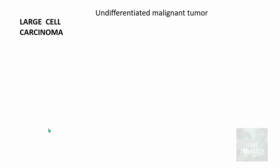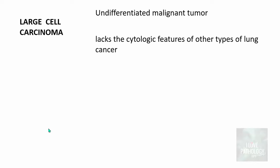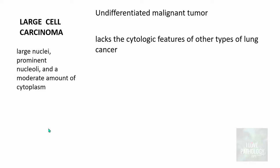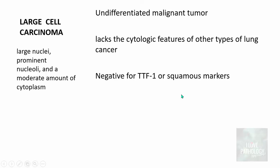Large cell carcinoma is another undifferentiated malignant tumor that lacks the cytological features of other lung cancer types. The cells do not look like squamous, small cell, or adenocarcinoma — instead they have large nuclei, prominent nucleoli, and moderate cytoplasm, but show no keratinization. They are negative for TTF1, ruling out adenocarcinoma, and do not stain for squamous markers either.